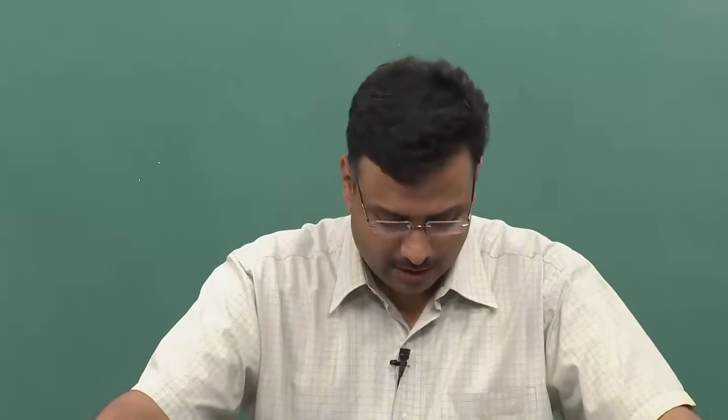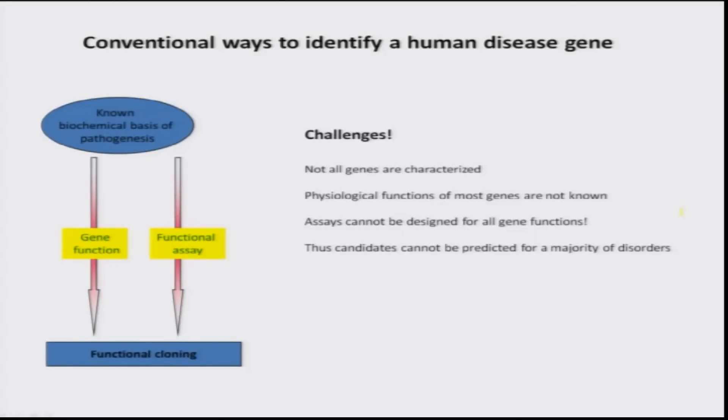A protein could have multiple different functions, and designing assays for some phenotypes can be extremely difficult. For example, if you are talking about mental retardation, what kind of assay would you do to understand how a gene defect affected intellectual abilities? That is going to be extremely difficult. For epilepsy, people thought it could result from abnormal neuronal function, so they looked at channels that regulate neuronal membrane potential. There were some successes, but it was an extremely difficult approach with very limited success.